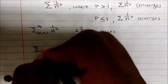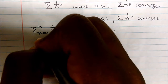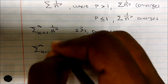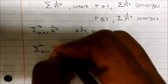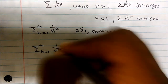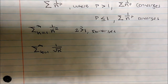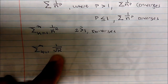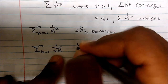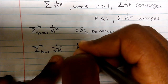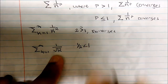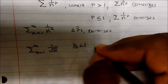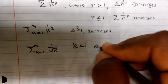What about the sum where k equals one to infinity of one over the square root of k? Remember, the square root is the same as the one-half power, and since one-half is less than one, the series diverges.